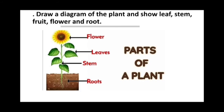Next question: Draw a diagram of the plant and show leaf, stem, fruit, flower, and root. Now we have to draw the diagram where we can see all these parts. Here I have given the example of only the flower, but you can also draw another plant which bears fruit — showing all the parts of the plant.